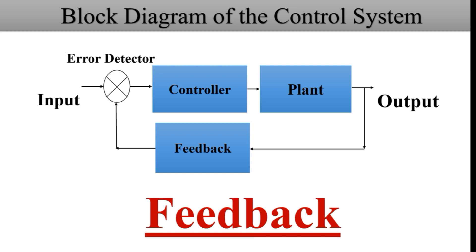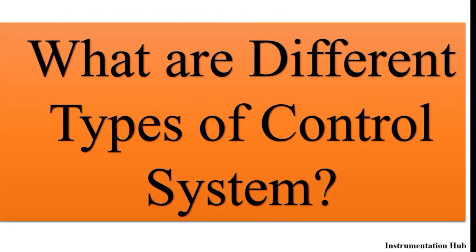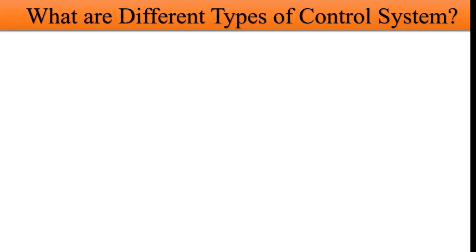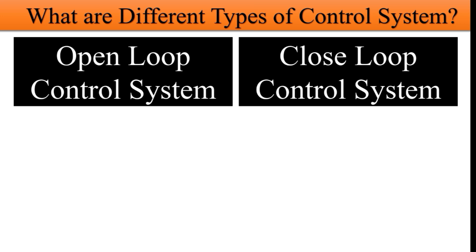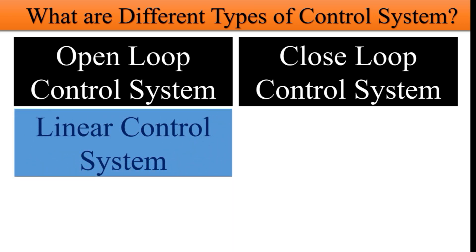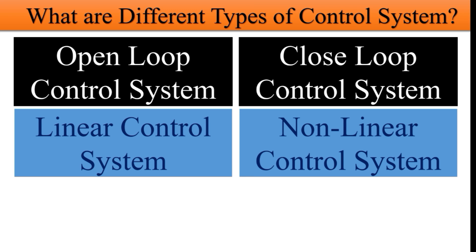The next question: what are the different types of control system? The first classification is based on feedback: open loop control system and closed loop control system. In an open loop control system, feedback is not present, whereas in a closed loop control system, feedback is present. The second classification is based on the superposition principle: linear control system and non-linear control system. A linear control system follows the superposition principle, whereas a non-linear control system does not.